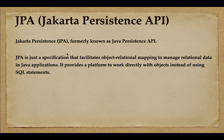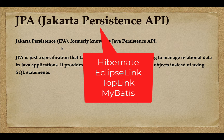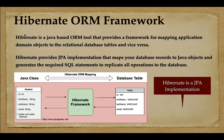In Java, JPA provides object-relational mapping features and provides standard APIs. There should be an implementation for those JPA standard APIs. For example, popular JPA implementations include Hibernate, EclipseLink, TopLink, and MyBatis.